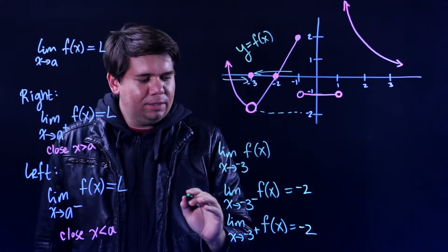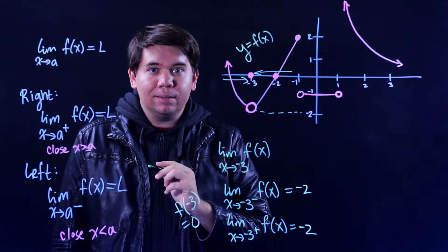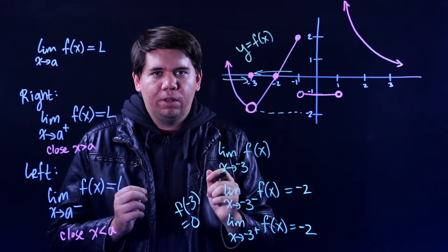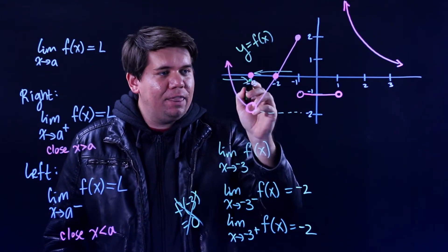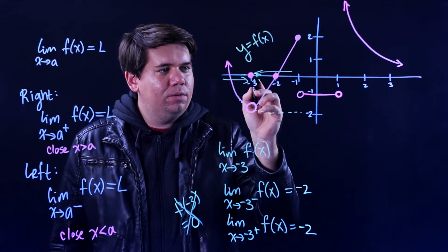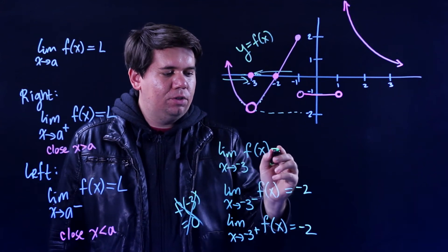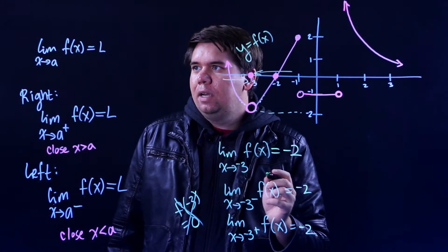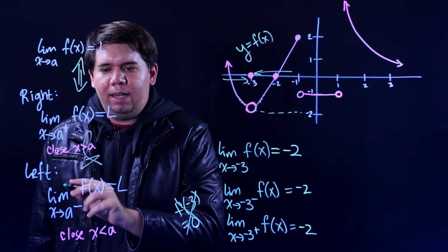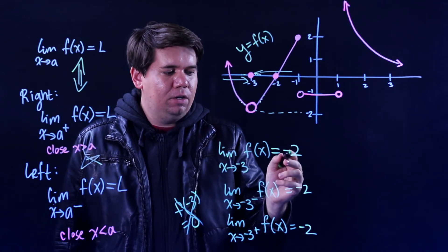Now, you might protest and say: isn't my function at negative 3 actually equal to 0? Yes, it is. But these limits aren't asking what happens at negative 3 — they ask what happens when we get close to negative 3. We don't need to worry about what the function equals at the value of negative 3; we can ignore that and just worry about what happens when we're close to it. From both the left and the right-hand side, I'm getting closer to negative 2, and so therefore my overall limit is negative 2. The overall limit will be equal to l if and only if both the right-hand limit and the left-hand limit equal l.